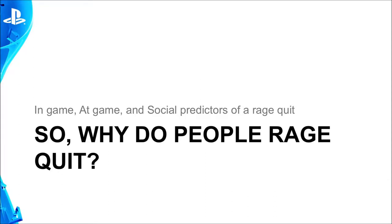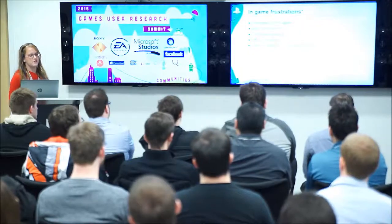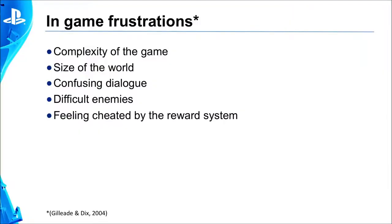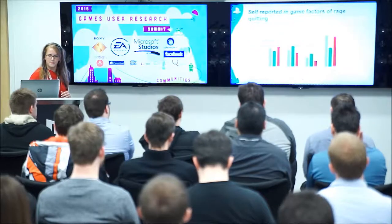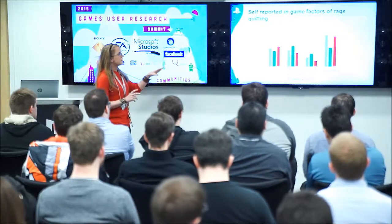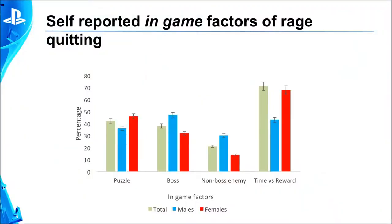Looking more specifically at in-game and at-game factors, I also included social predictors of rage quitting because the social impact of gaming matters too. In-game frustrations have to do with the complexity of the world, the size of the world, confusing dialogue, really difficult enemies, feeling cheated. I had about 80 questions in each section. The majority of players reported rage quitting most when the time they spent didn't match the reward they got — either an in-game reward like an item, or just the feeling of achievement.